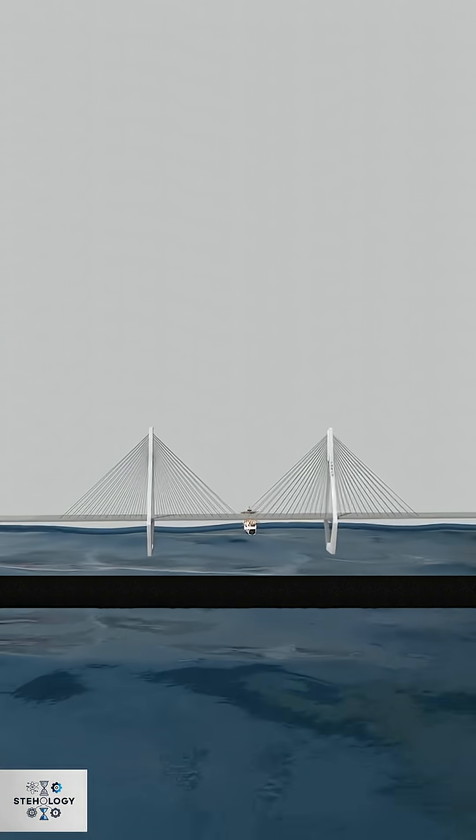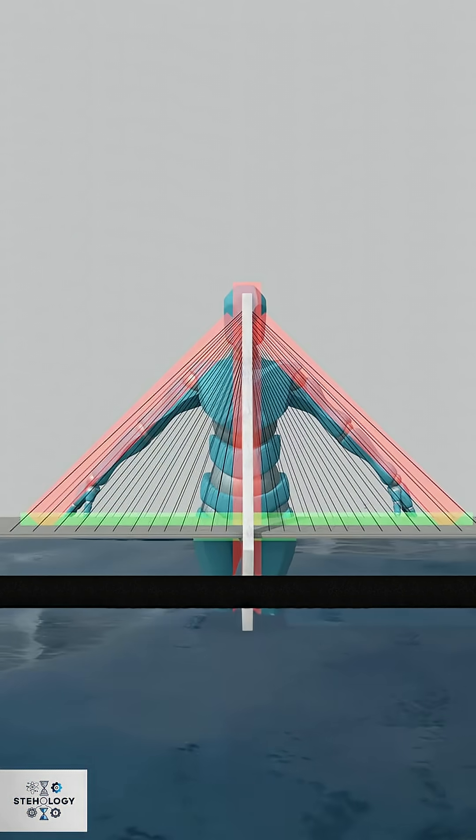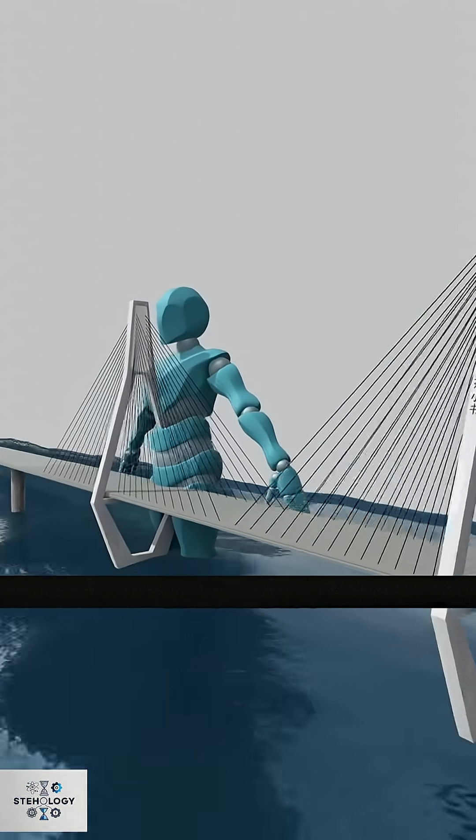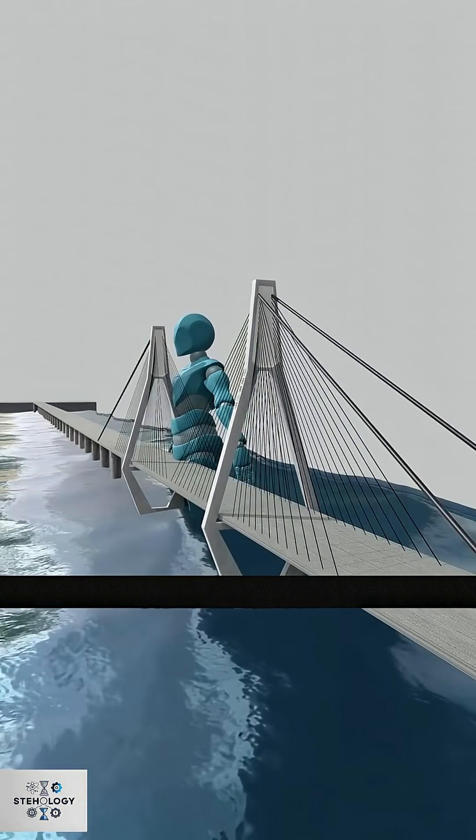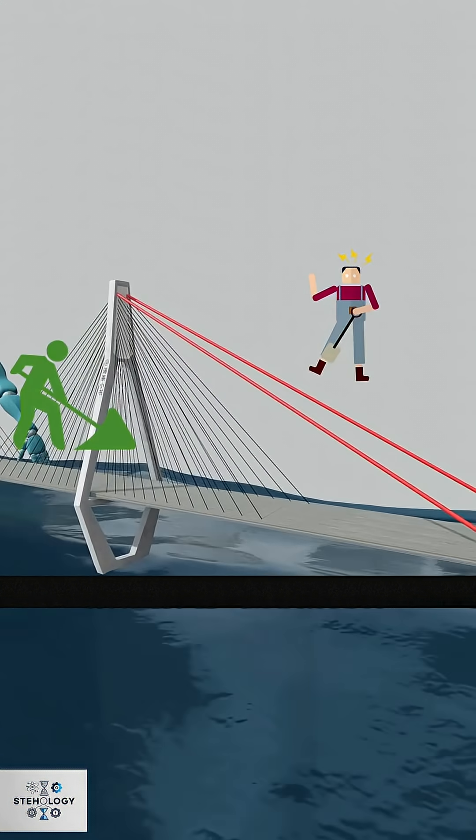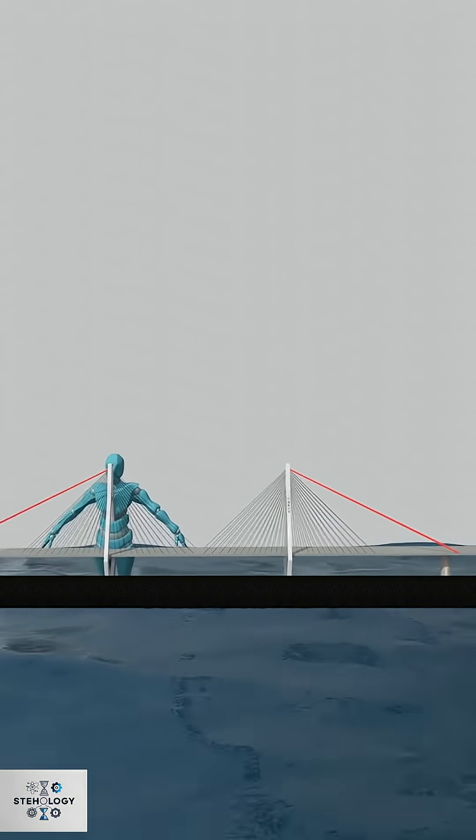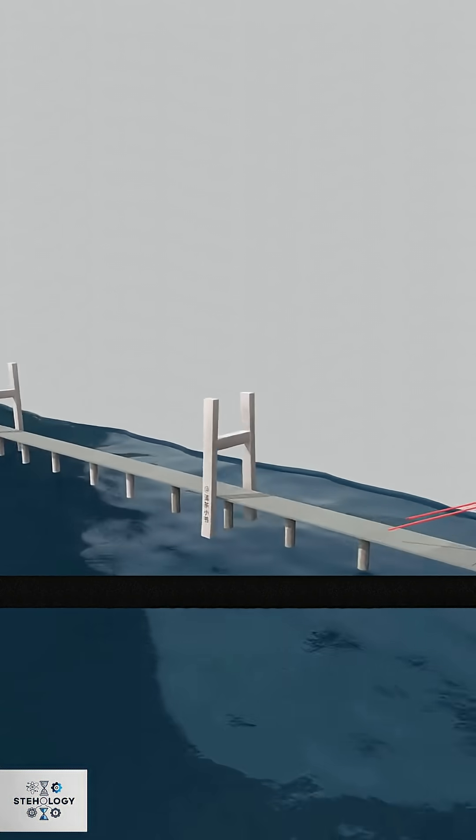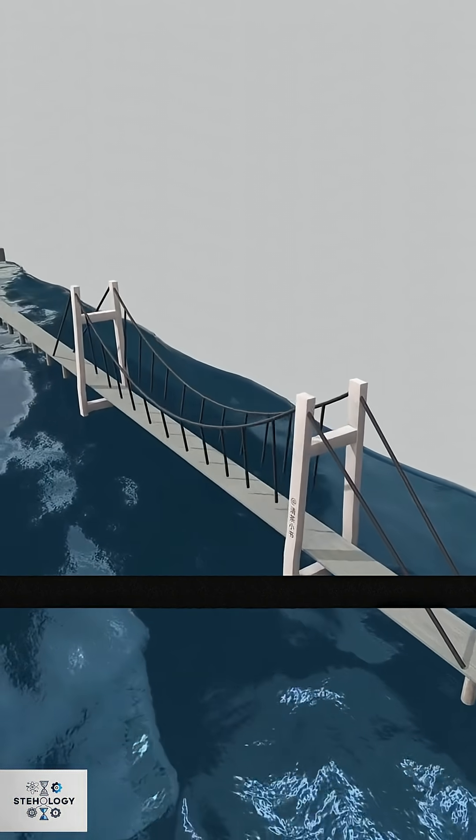For even greater spans, the length and complexity of cable-stayed cables become a challenge. The solution? Suspension bridges, which use two main, thick cables to suspend the entire deck, allowing for vast distances akin to two people lifting a plank together.